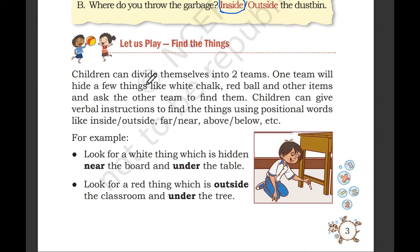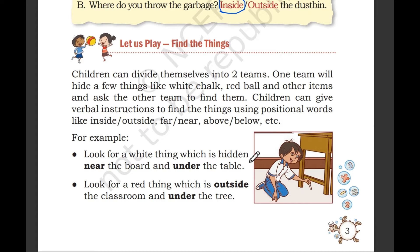Let us play — Find the Things. Children can divide themselves into two teams. One team will hide a few things like white chalk, red ball, and other items, and ask the other team to find them. Children can give verbal instructions using positional words like inside, outside, near, above, below, etc.